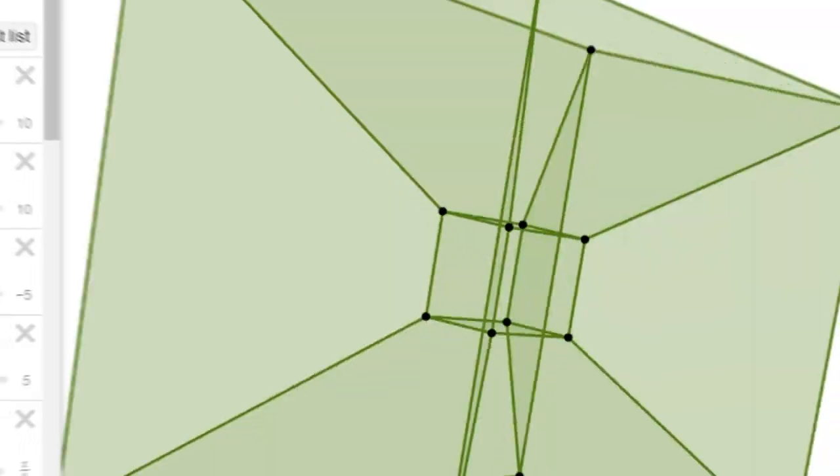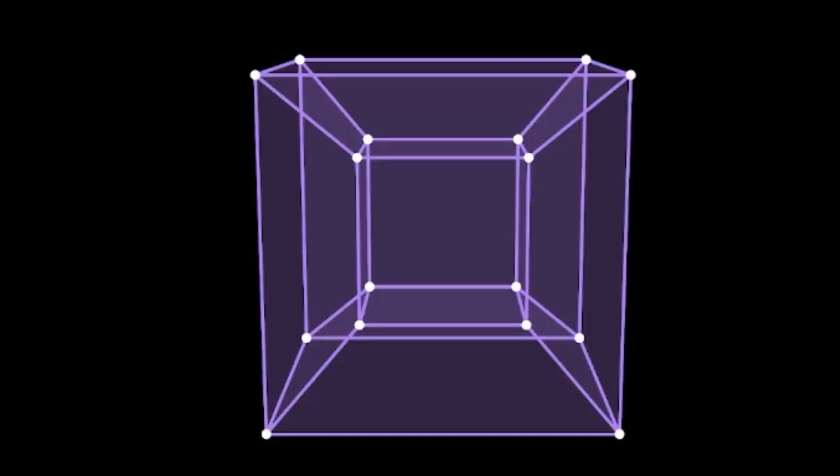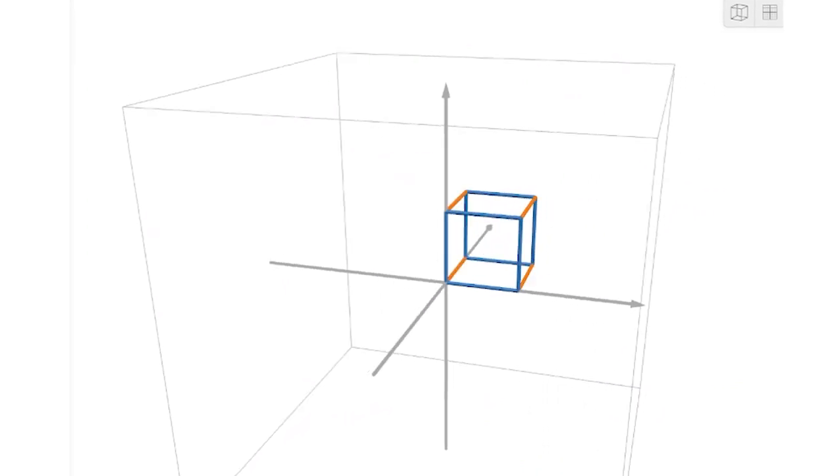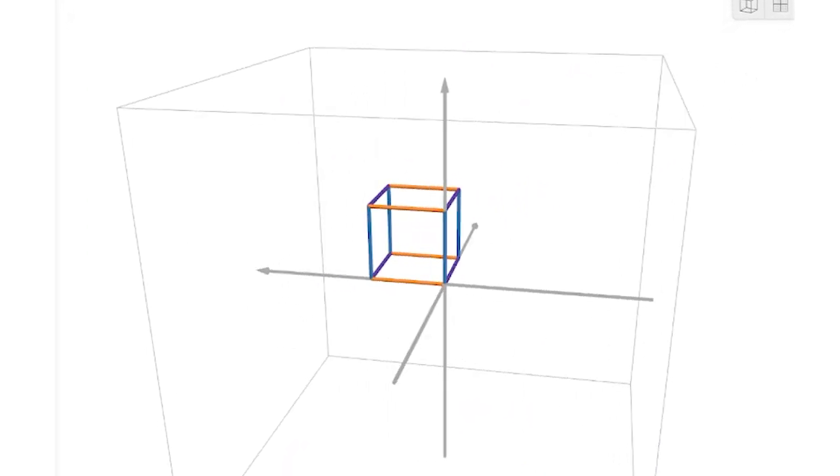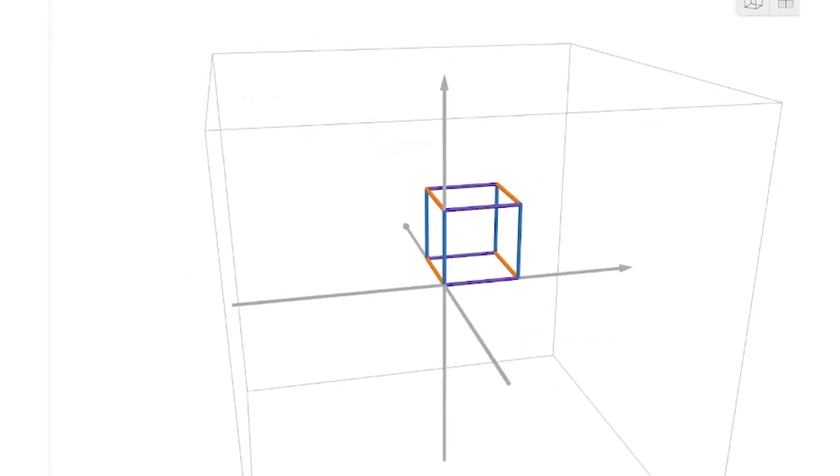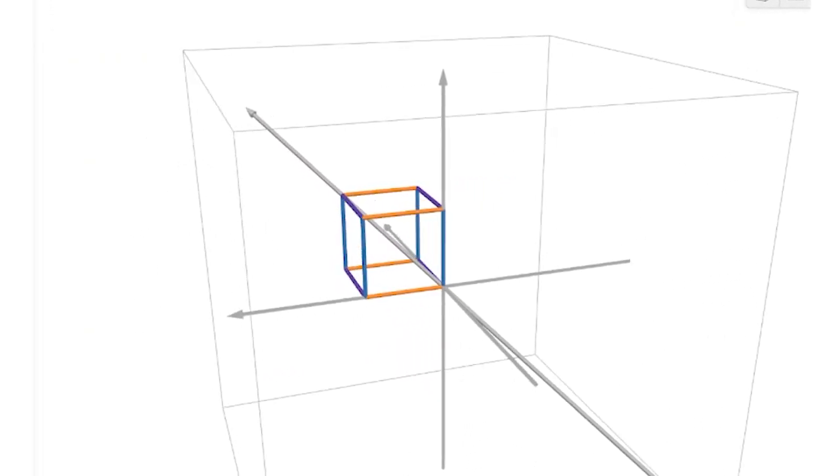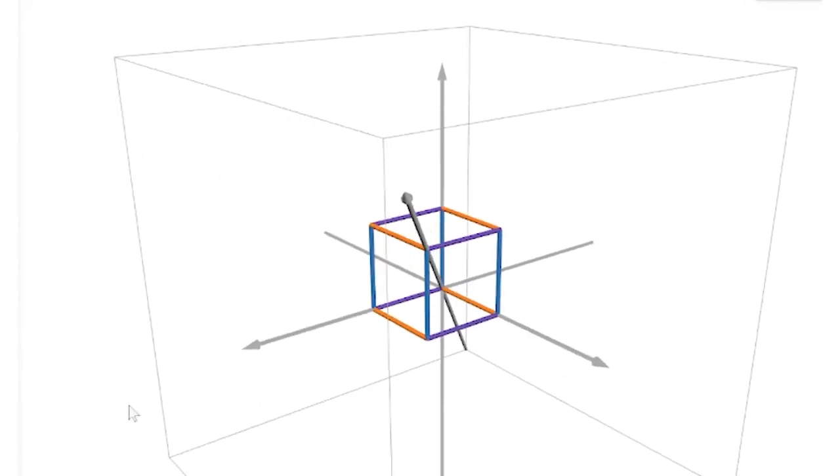And likewise we can never actually see a 4D cube, we can only ever see the cross-section. This is the cross-section of a hypercube and it looks just like a small cube inside of a big cube. That's because a normal cube has edges that run parallel to the three axes. So when a fourth axis is added, there needs to be some new edges that run parallel to this fourth axis. And that's why these diagonal edges connect the smaller cube to the bigger cube.